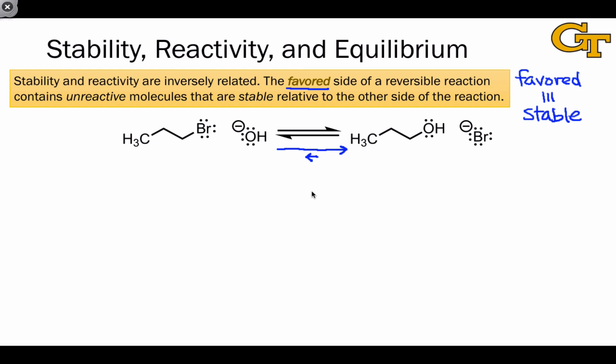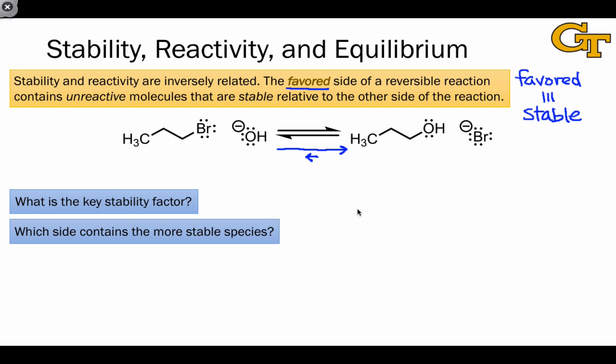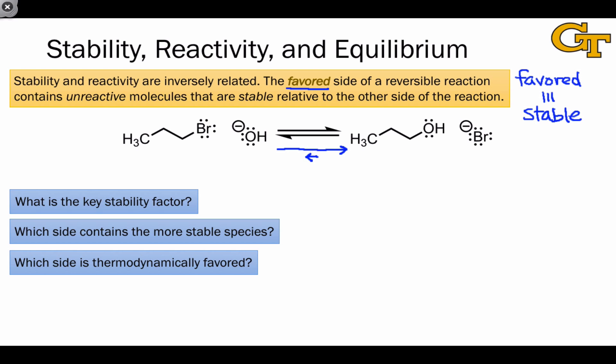The process for doing this involves answering a couple of key questions. The first is, what is the key stability factor or stability trend that's relevant here? Which side contains the more stable species with respect to the stability trend that we answered in the first question? Which side is thermodynamically favored? Which side then contains the less reactive species? And what's the magnitude of K and the sign of delta G?